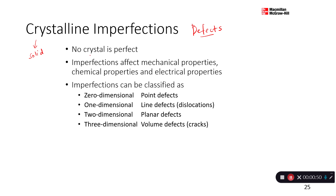No crystal is perfect — of course we know this. Anything that is formed naturally will have its own characteristics. Imperfections affect mechanical properties, chemical properties, and electrical properties.